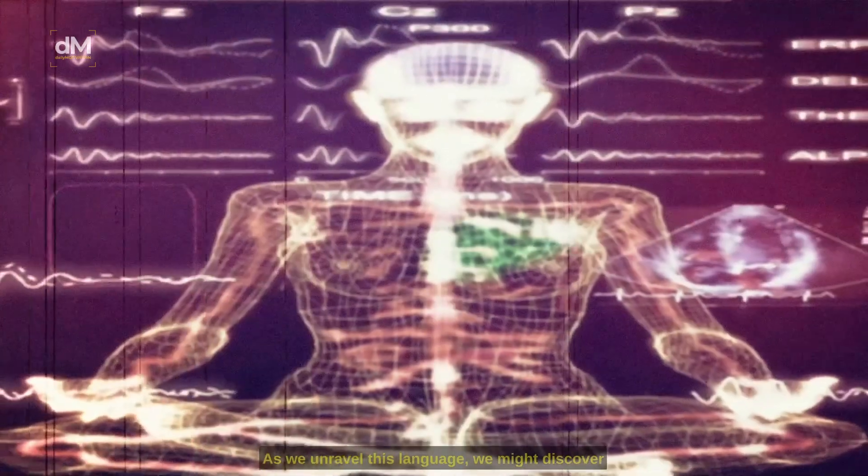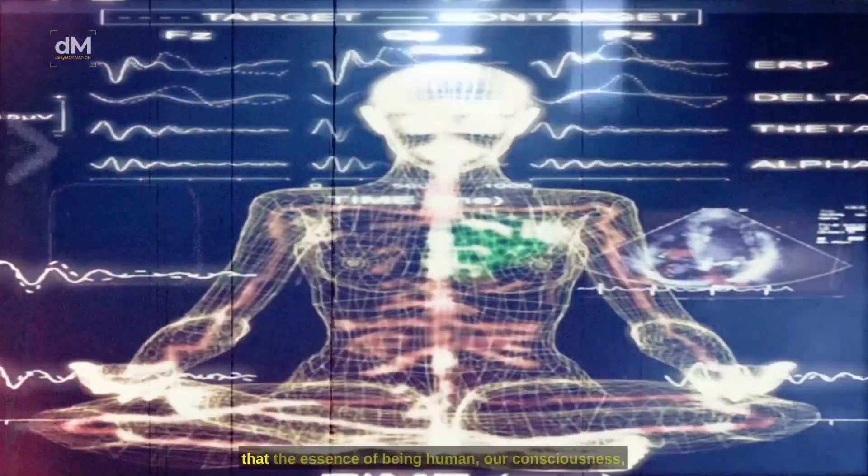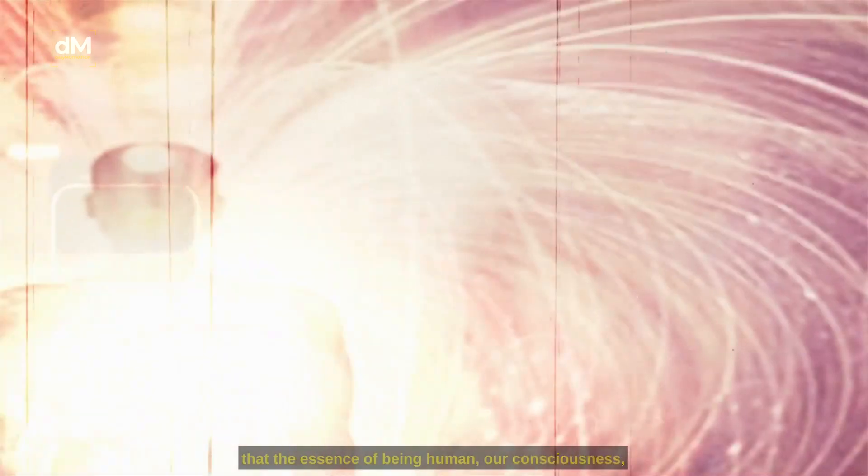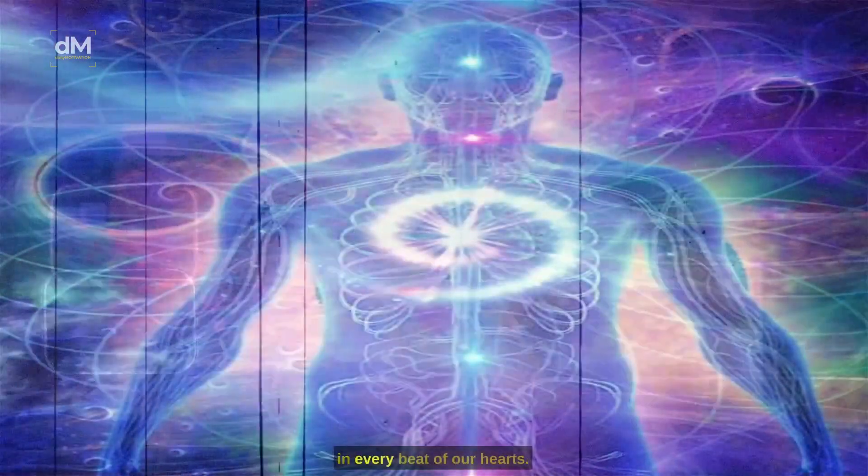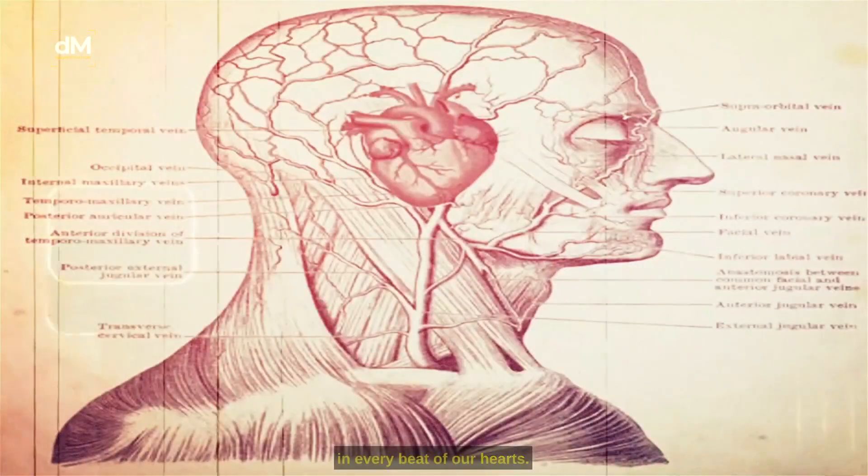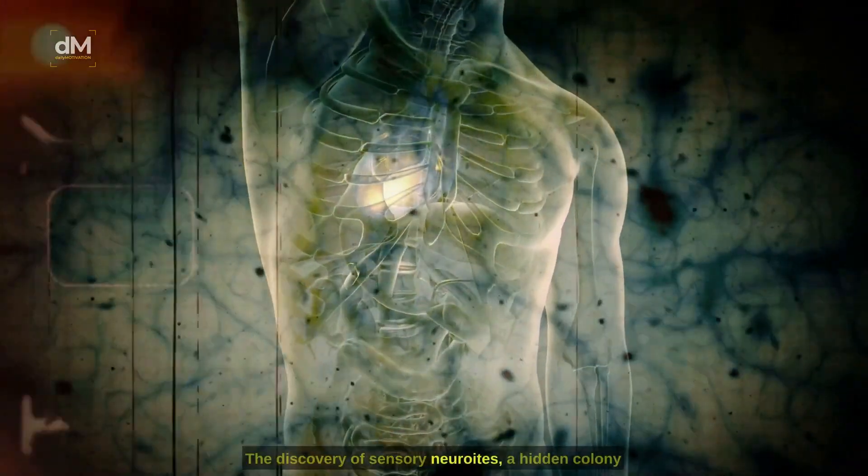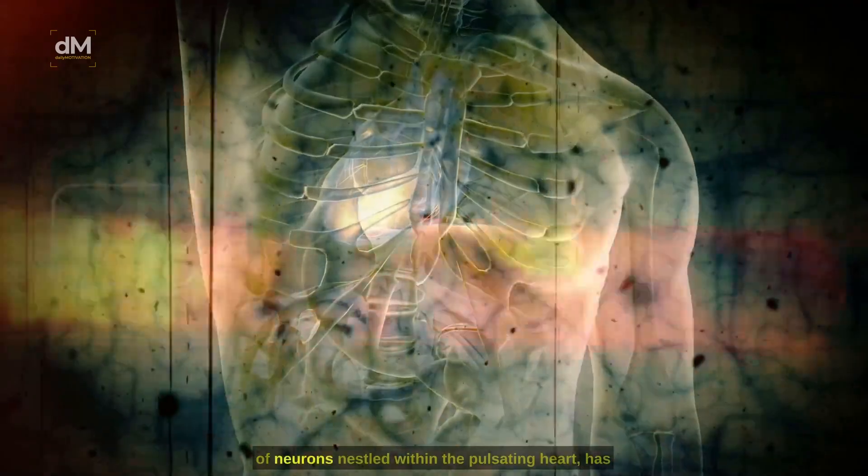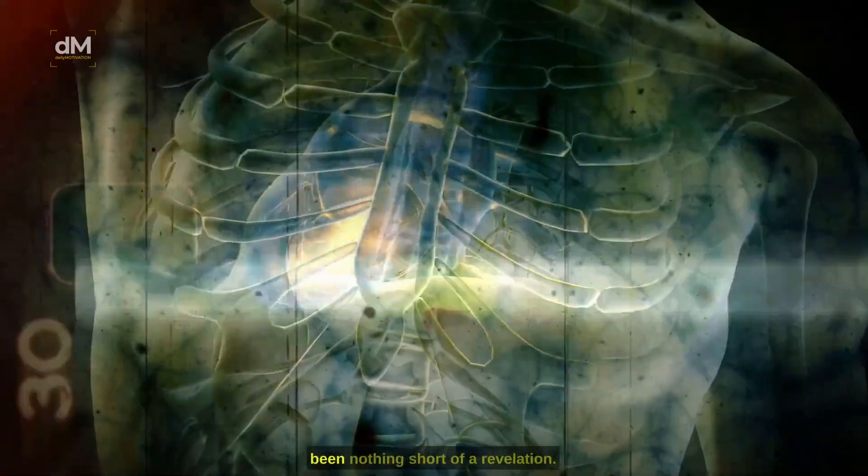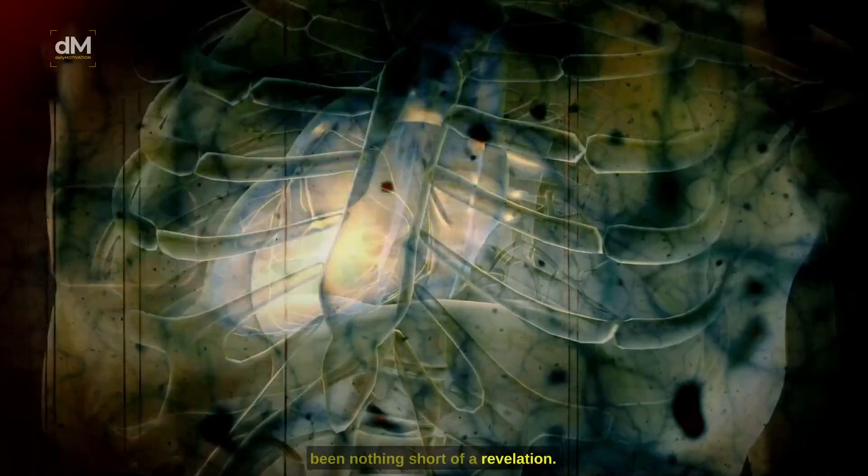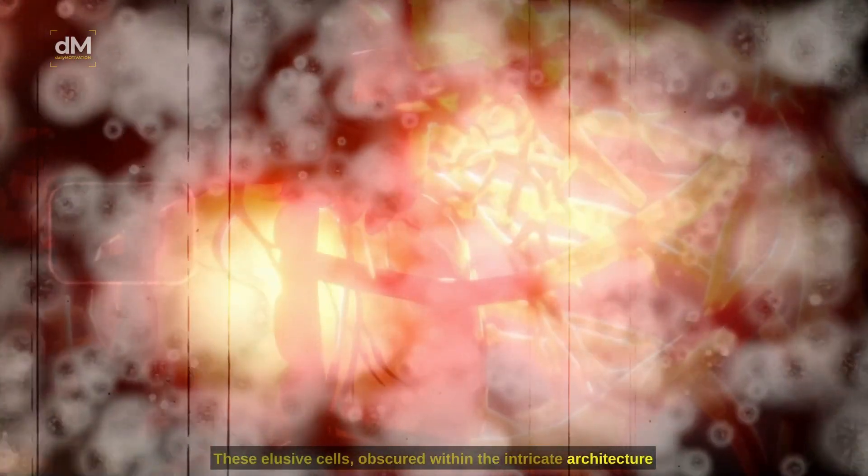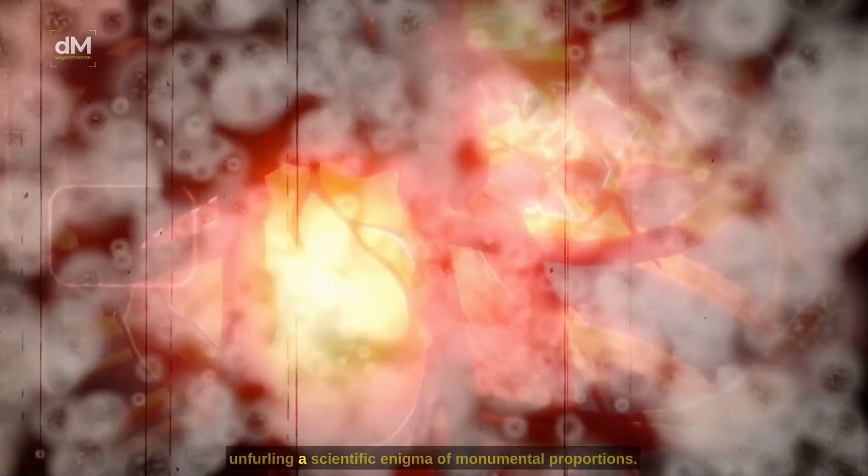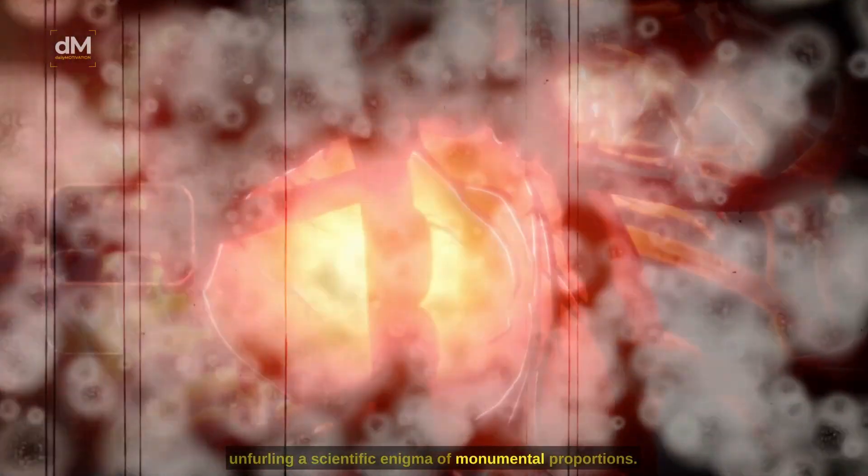As we unravel this language, we might discover that the essence of being human, our consciousness, isn't solely in our brains, but also pulsating in every beat of our hearts. The discovery of sensory neuroites, a hidden colony of neurons nestled within the pulsating heart, has been nothing short of a revelation. These elusive cells, obscured within the intricate architecture of the heart, have emerged from the shadows, unfurling a scientific enigma of monumental proportions.